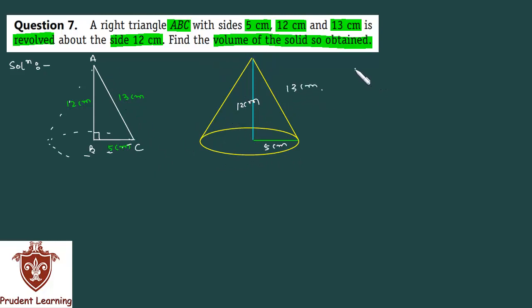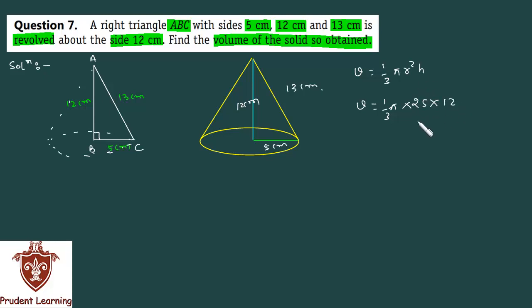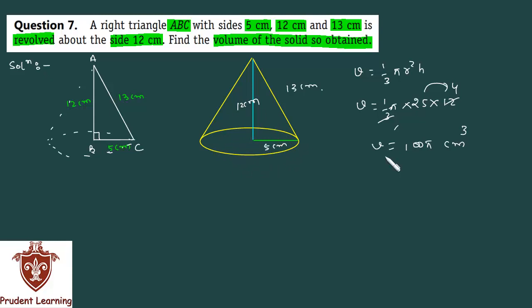We need to find the volume. The formula is 1/3 π r² h. Substituting the values: 1/3 × π × 5² × 12 = 1/3 × π × 25 × 12. Since 12 divided by 3 is 4, we get 25 × 4 = 100. So the volume is 100π cm³.